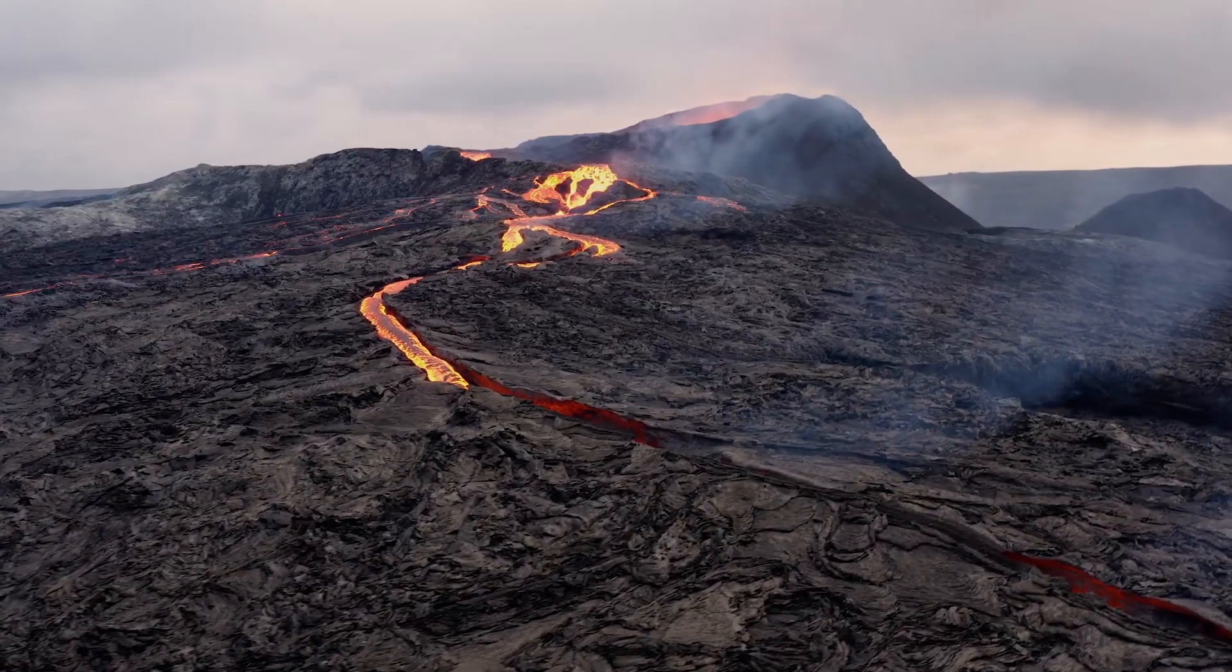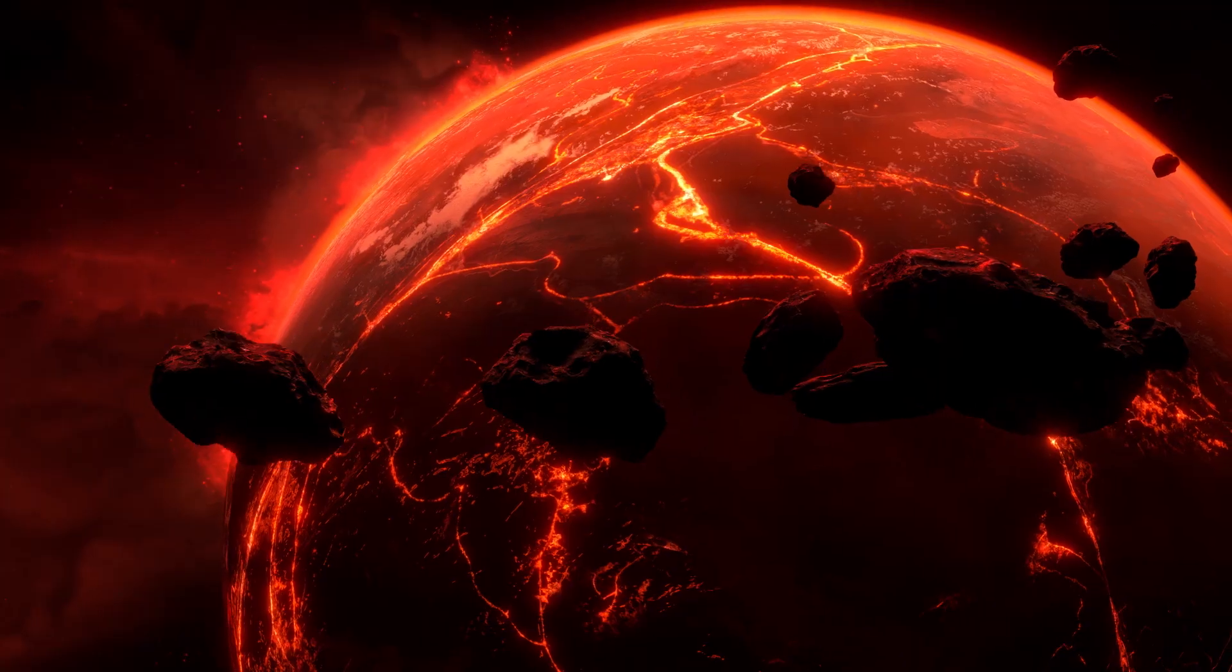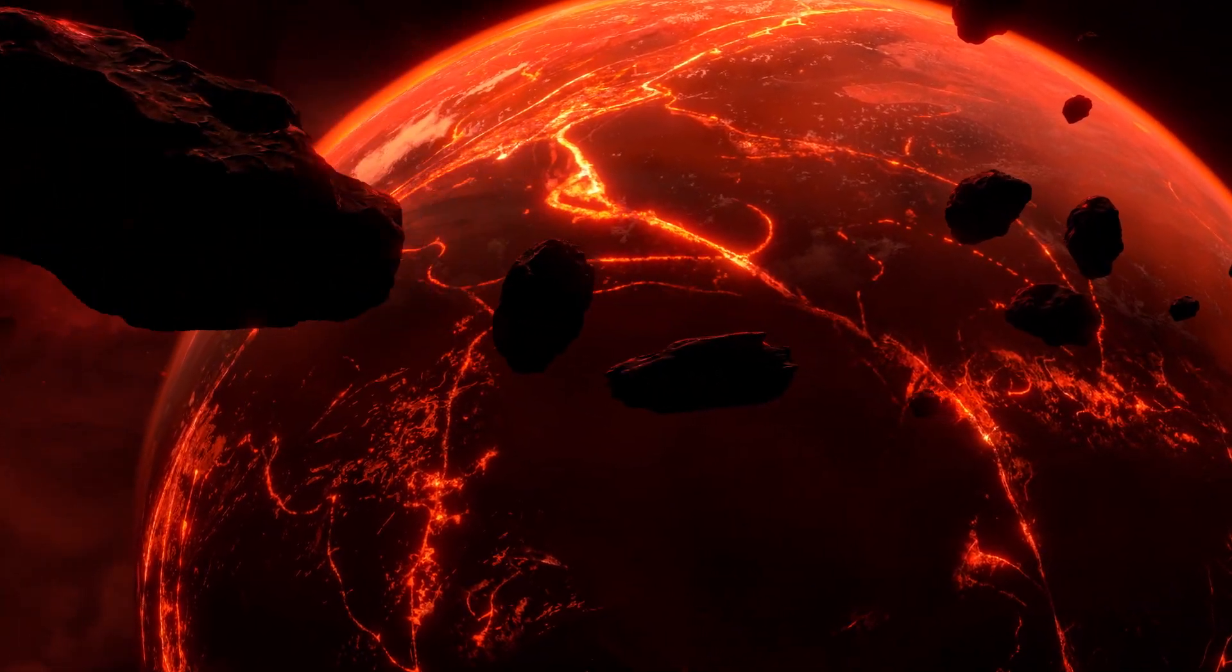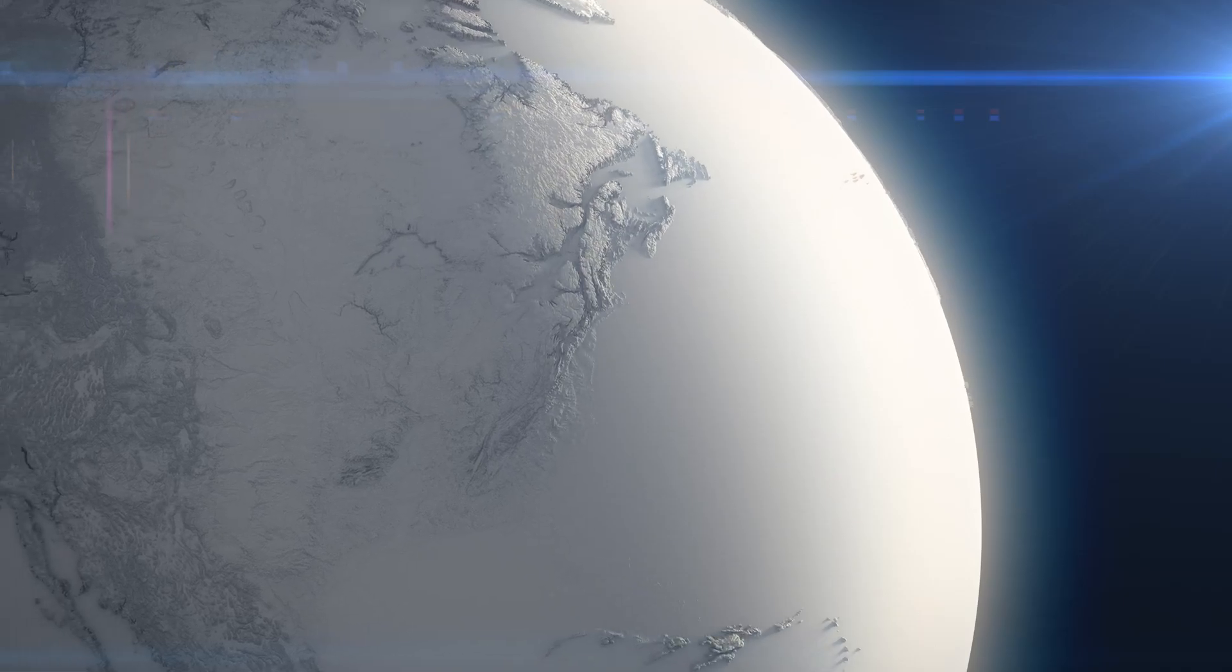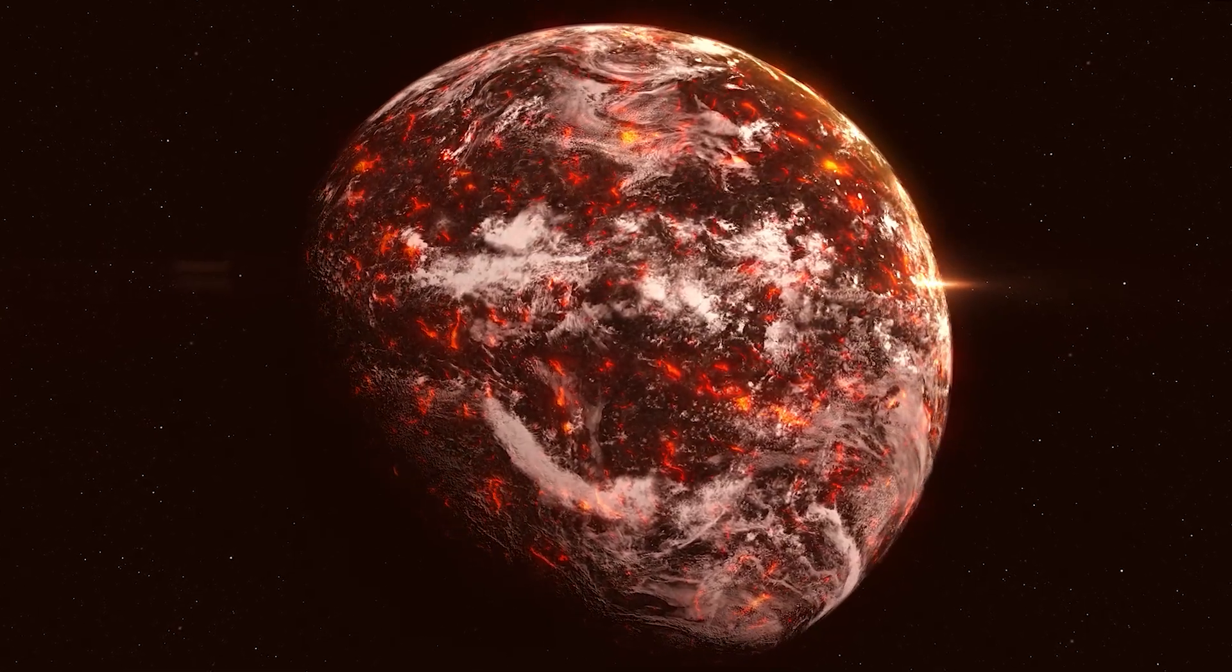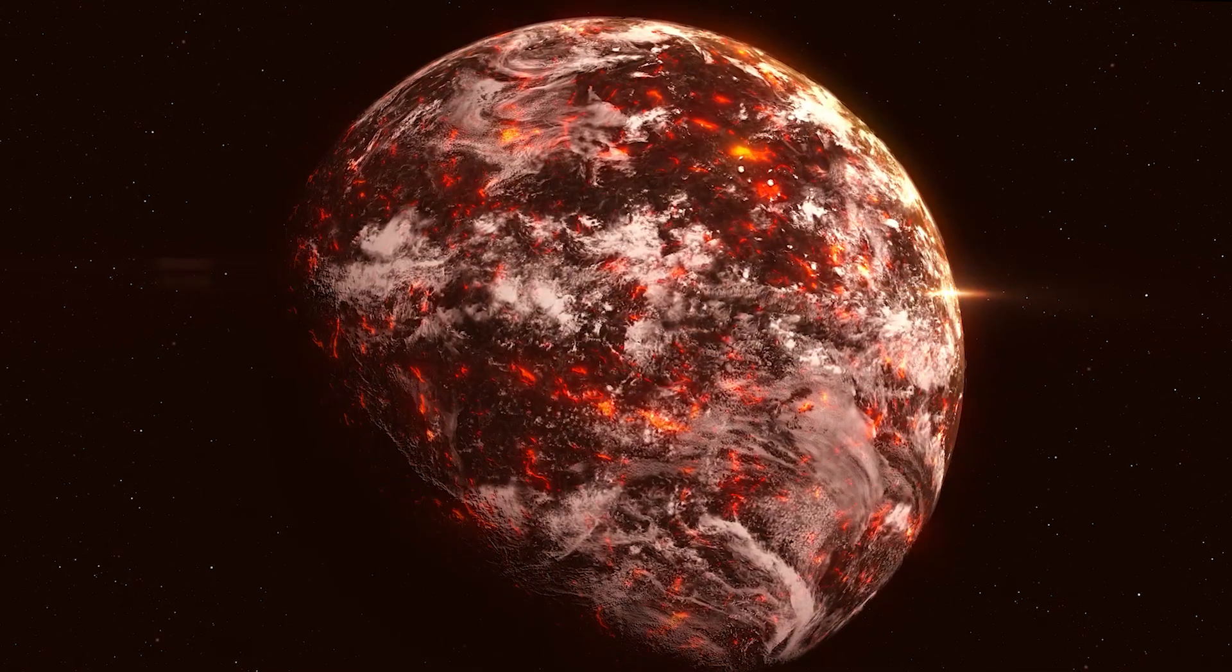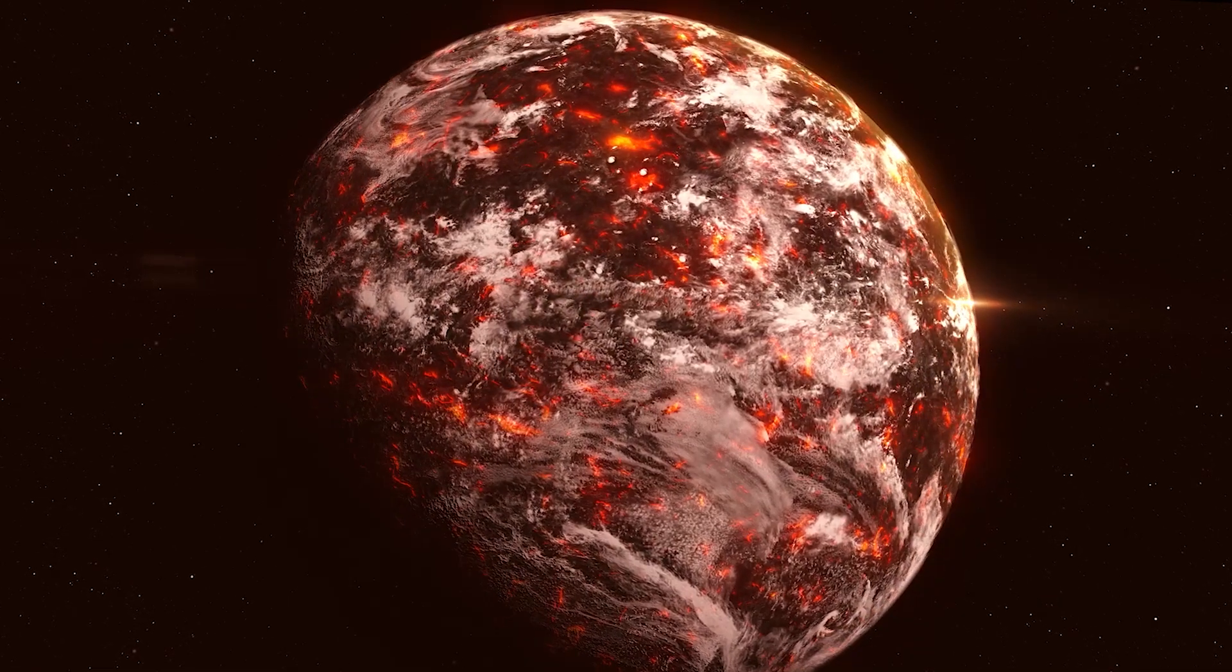Due to Earth's tectonic activity and changes in the brightness of the sun, the climate has veered over time from ocean boiling hot to planet-wide deep freeze cold. Earth has been uninhabitable for humans and other larger creatures for most of its 4.5 billion-year history.